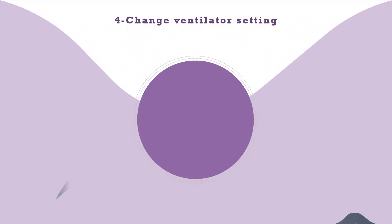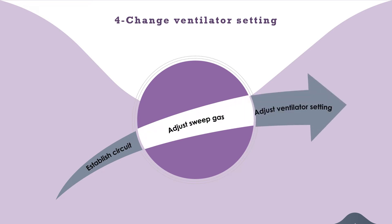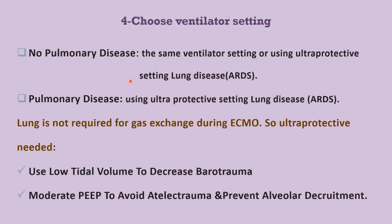The fourth point in initiating ECMO is changing the ventilatory setting. After establishing the circuit and adjusting sweep gas, we then adjust ventilatory settings. Choose the ventilatory setting depending on whether there is pulmonary disease or not. With no pulmonary disease, we can use the same ventilatory setting or an ultra-protective setting for lung disease like ARDS. With pulmonary disease, use ultra-protective settings. The lung is not required for gas exchange during ECMO, so ultra-protective settings use low tidal volume to decrease barotrauma, moderate PEEP to avoid atelectrauma, and prevent alveolar derecruitment.